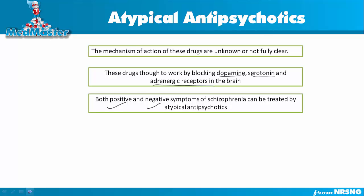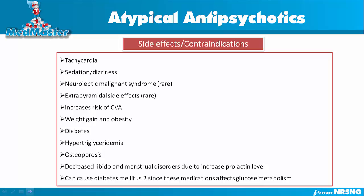Side effects of atypical antipsychotics include tachycardia. This medication also blocks cholinergic receptors, producing anticholinergic side effects. Other side effects include sedation, dizziness, increased risk of CVA, weight gain, obesity, diabetes, increased triglycerides, and osteoporosis.